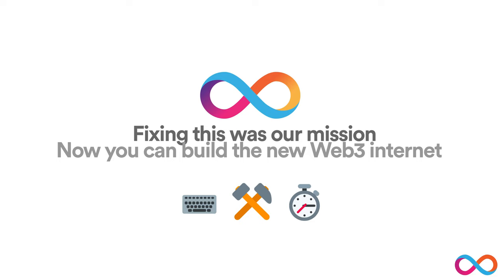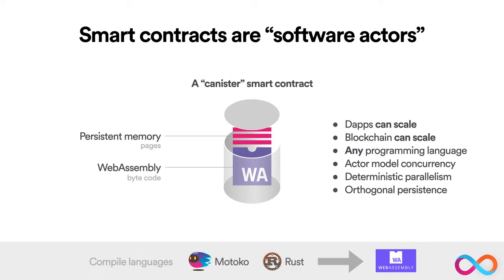You can do this using a new form of super-advanced smart contract called Canister Smart Contracts, which are software actors. Each Canister Smart Contract is a bundle of WebAssembly bytecode and persistent memory pages that the bytecode alone can execute within. This new kind of smart contract makes it possible to create dApps that can scale, because it allows these smart contracts to run in parallel. You can create Canister Smart Contracts using any programming language that can compile down to WebAssembly.